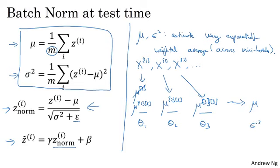And similarly, you use an exponentially weighted average to keep track of these values of sigma squared that you see on the first mini-batch in that layer, sigma squared that you see on the second mini-batch and so on. So you keep a running average of the mu and the sigma squared that you're seeing for each layer as you train the neural network across different mini-batches.